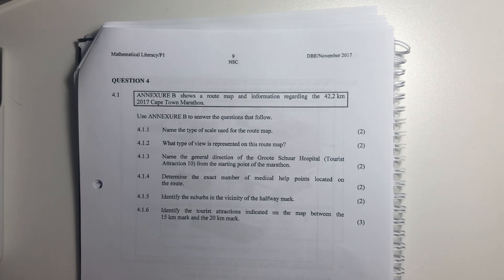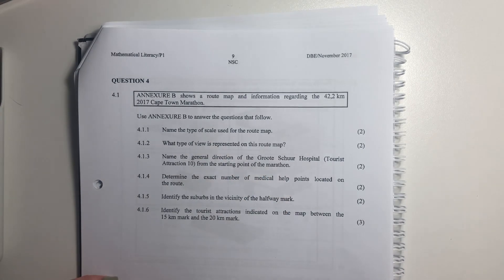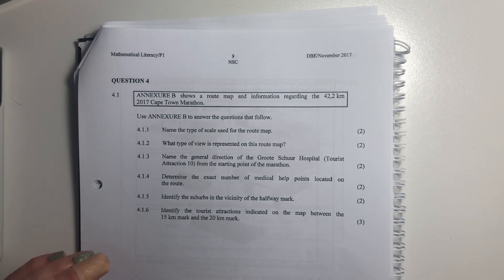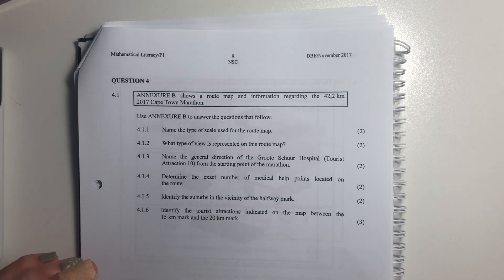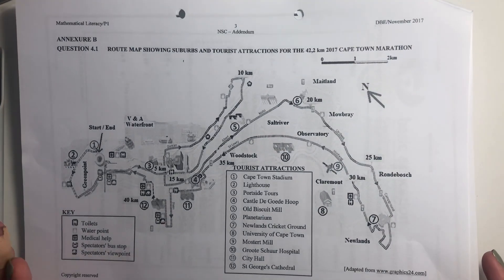Let's move on to question four. Question four says, Annexure B shows a route map and information regarding the 42.2 kilometer 2017 Cape Town Marathon. Before you move on to anything, what you do is you go find that annexure, make sure you got the right one, and then go to the questions.